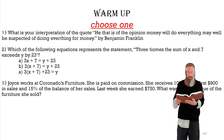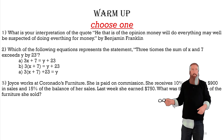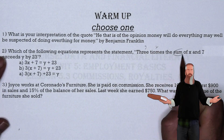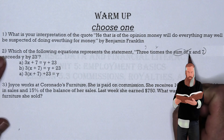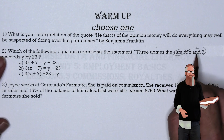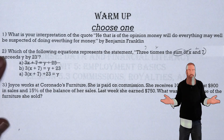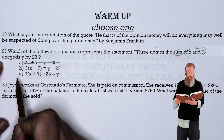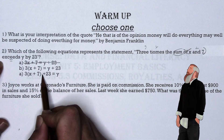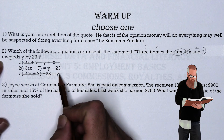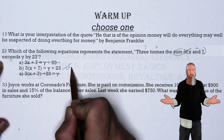Before we get into it, let's do warm-up number two. Which of the following equations represents: 'three times the sum of x and seven exceeds y by 23'? Three times the sum means 3(x + 7). 'Exceeds' is used as an equal sign, so that's the left side. 'y by 23' means y plus 23 on the right. This eliminates the first and bottom choices, so B is the answer.